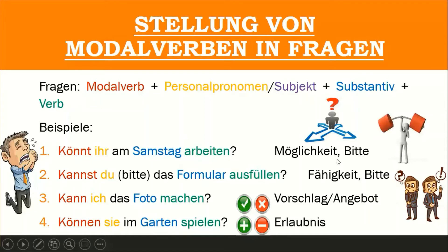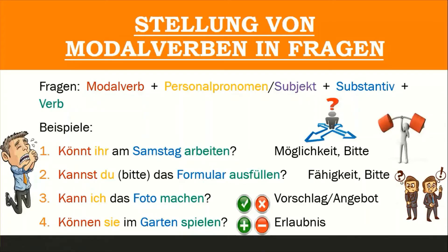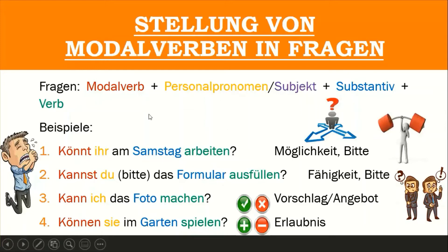This question not only shows a request, it can also show a possibility, which we call in German Möglichkeit. It shows possibility in the sense that the workers may not be able to come in on a Saturday — for example, if they do not have their own cars, they may find it difficult to use public transport to get to the office on a Saturday.